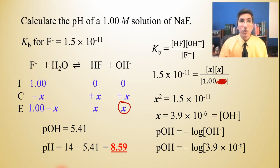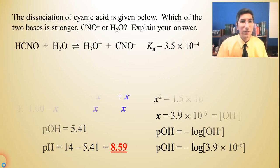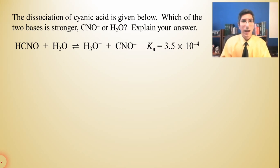So here, hopefully, you can see how we can determine the pH of a weak base, especially one that may not be quite that obvious. We might have to solve for the Kb in the case of this. Now, before we finish, let's take a look at some other types of questions that we could be asked about weak bases and weak acids. So here we have the dissociation of cyanic acid is given here. Which of the two bases is stronger? CNO negative, the cyanate ion, or water? Explain your answer.